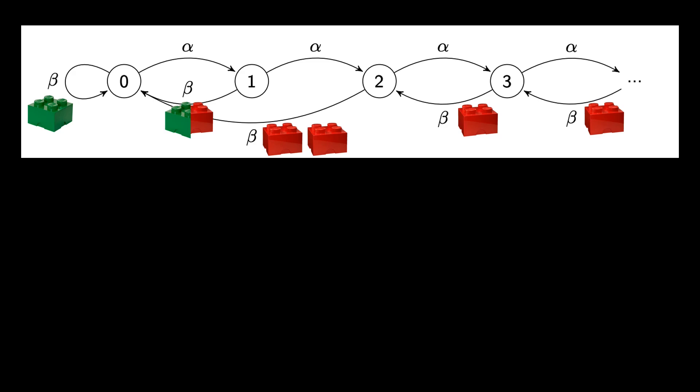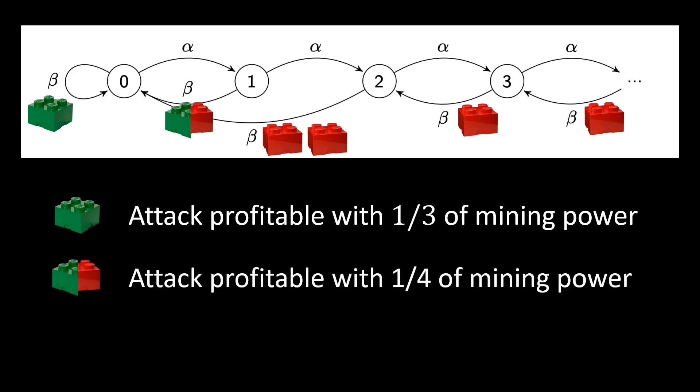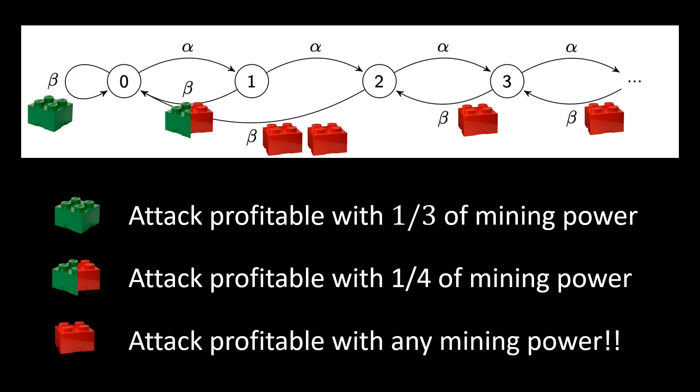We skip the actual math, and just show the results. If the attacker has no power at all over the network, and every honest miner will see the green block first, one-third of the mining power is enough to mine a higher ratio of blocks than when being honest. If the attacker has a fast network and honest miners append their next block 50-50 with the red and green block, then already one-fourth of the mining power is enough to gain an advantage over being honest. And finally, if the attacker manages that the honest miners always append their next block behind the red block in case of a race, this strategy is always profitable.